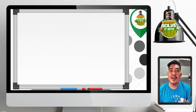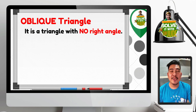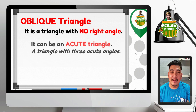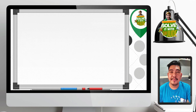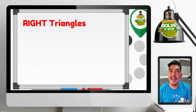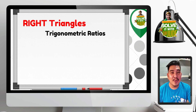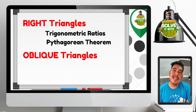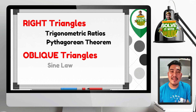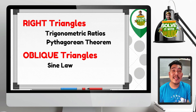Just to recall about Oblique Triangles: an Oblique Triangle is a triangle with no right angle. Your Oblique Triangle can be an Acute Triangle or an Obtuse Triangle. Right triangles can be solved using trigonometric ratios — SOHCAHTOA — and the Pythagorean theorem. When dealing with Oblique Triangles, they can be solved using the Sine Law or the Cosine Law.